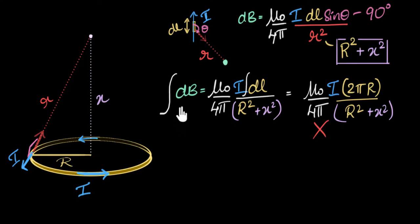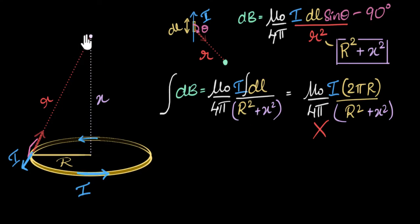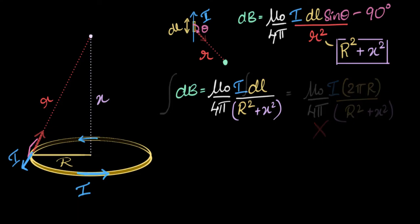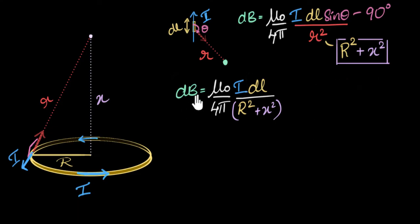The thing we didn't take into account is the direction of the magnetic field. Magnetic field is a vector quantity. We know the magnitude of the magnetic field due to each tiny section is exactly the same, but we don't know for sure the direction is also going to be the same. Only then can we add them up. So let's now focus on the direction of the magnetic field.